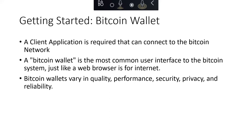A Bitcoin wallet is the client application you use to work with Bitcoin. Bitcoin is a protocol accessed using a client application that speaks the Bitcoin protocol. A wallet is the common term for these user interfaces to the Bitcoin system — just like a web browser is a common UI for interacting with the World Wide Web, there are many implementations and brands of Bitcoin wallets. Just as there are many brands of web browsers like Chrome, Safari, Firefox, and IE, Bitcoin wallets vary in quality, performance, security, privacy, and reliability. There's also a reference implementation of the Bitcoin protocol that includes a wallet, referred to as Bitcoin Core.